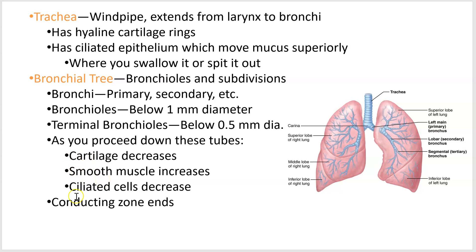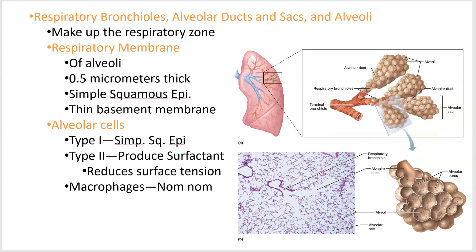At the end of the terminal bronchioles, you've reached the end of the conducting zone. Then we move on to the respiratory zone — still in the lower respiratory system, but now in the respiratory zone. Here we have respiratory bronchioles, alveolar ducts, alveolar sacs, and alveoli.